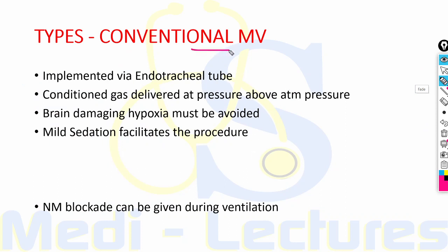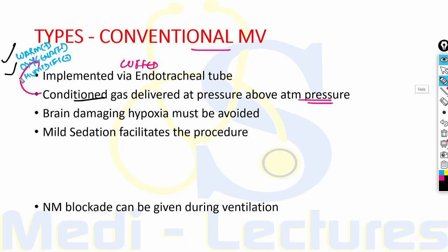Conventional mechanical ventilation is implemented via a curved endotracheal tube, through which conditioned gas — warmed, oxygenated, and humidified — is delivered at pressures above atmospheric pressure. During intubation, brain-damaging hypoxia must be avoided, so the patient should be pre-oxygenated before intubation and the procedure should be performed by skilled personnel.